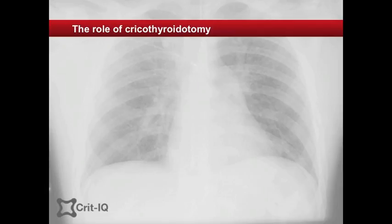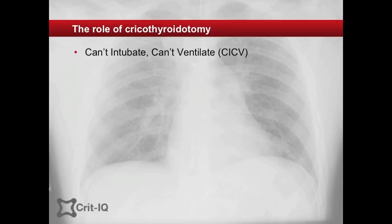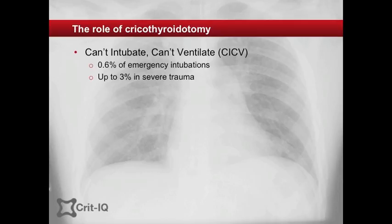Intubation in the ICU and emergency environment is often performed in high risk patients. The incidence of a can't intubate, can't ventilate scenario is significantly higher in this group than in elective anaesthesia, with some reports suggesting an incidence of 0.6% of all emergency intubations and up to 3% in patients with severe trauma.